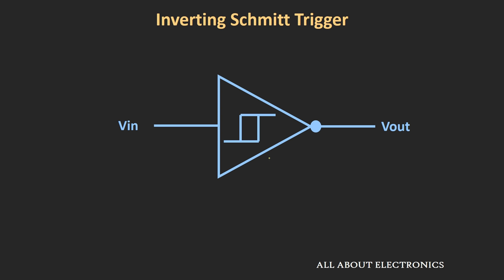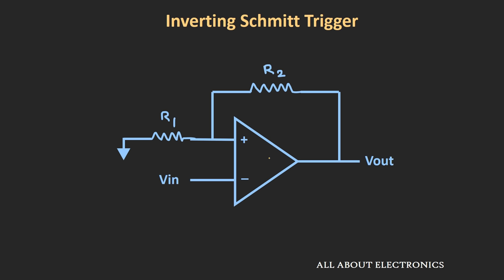Now let us see how we can design the inverting and non-inverting Schmitt triggers. There are many ICs available which can be directly used as a Schmitt trigger, but this Schmitt trigger can also be designed using an op-amp and comparators, or even using transistors. In this video, we will understand how the inverting and non-inverting Schmitt triggers can be designed using the op-amp. This is the example of the inverting Schmitt trigger designed using an op-amp, where the input is applied at the inverting terminal and there is a positive feedback from output to the input side.